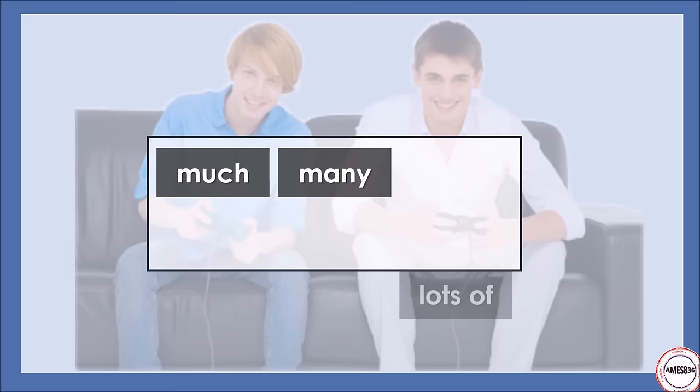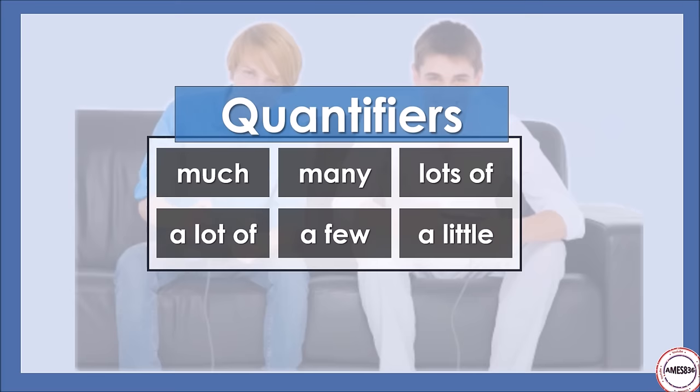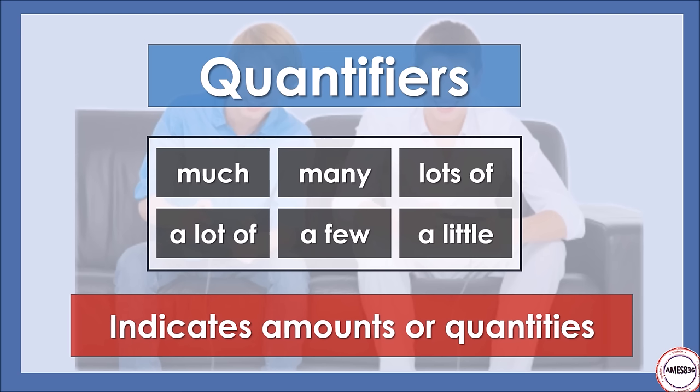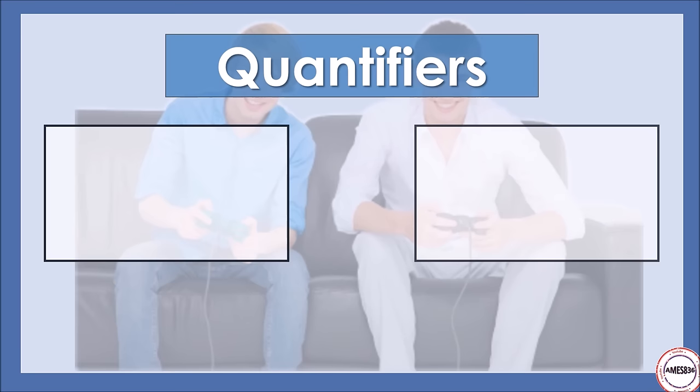Much, many, lots of, a lot of, a few, a little — they are called quantifiers. We use them before a noun to indicate the amount or quantity of something. Let's see how it all works. First, let's organize these quantifiers into two groups.